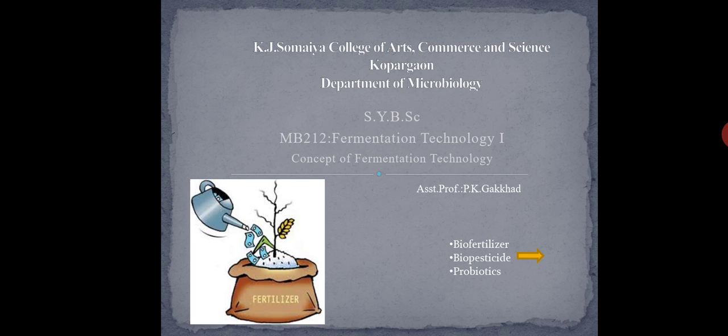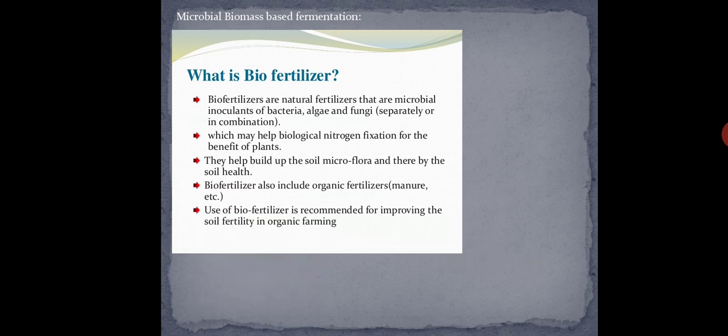Before starting the actual point of biofertilizer, biopesticide, and probiotic, let me tell you about fermentation. What is fermentation? How do you define fermentation? Fermentation is a metabolic process that produces chemical changes in substrates with the help of enzymes. Basically, metabolic processes occur where complex food like carbohydrates is broken down — polysaccharides are converted into monosaccharides.